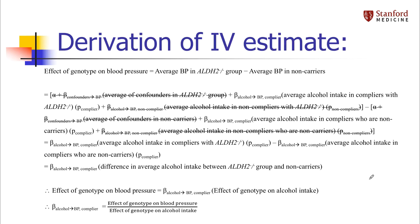Now I'm going to derive this more thoroughly. Don't be intimidated by this slide — a lot of things are going to cancel. The effect of genotype on blood pressure is easy to get from the data: it's just the difference in average blood pressure in the mutant group minus the average blood pressure in the non-carriers. I already showed you that's about a one-point reduction in blood pressure. But then I can break down the components that affect blood pressure separately for the two groups.